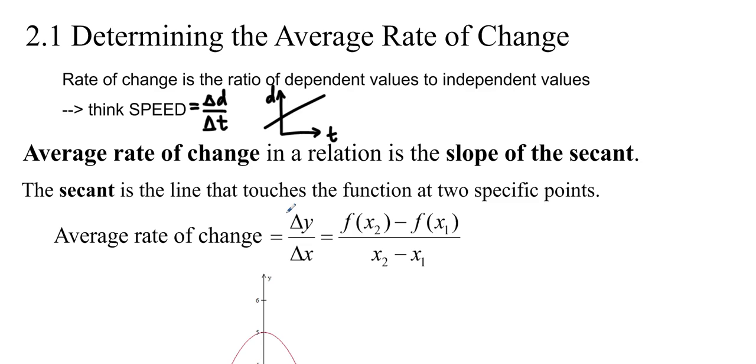Rate of change is the ratio of dependent values to independent values. So if we're thinking about the distance-time graph, then we often want to know how far we can go. What's the distance that I can go in a certain amount of time? That's called speed.